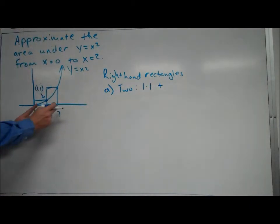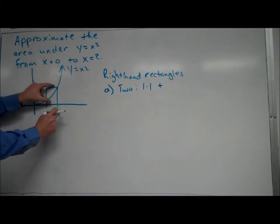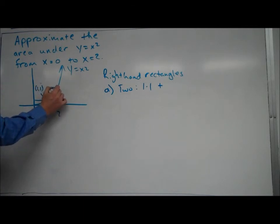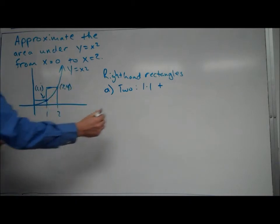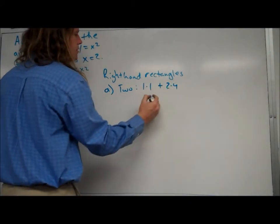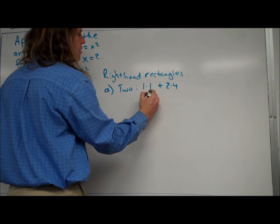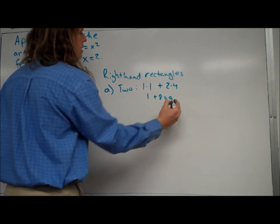Our next rectangle has a width of one. It's a height of—now it's determined by x=2, so we take two, plug it into the equation. That point is (2,4), so it's a height of four. So it's going to be two times four. So we get for this, it's going to be one plus eight, so we get the approximation is nine, which we can clearly see is way too big.